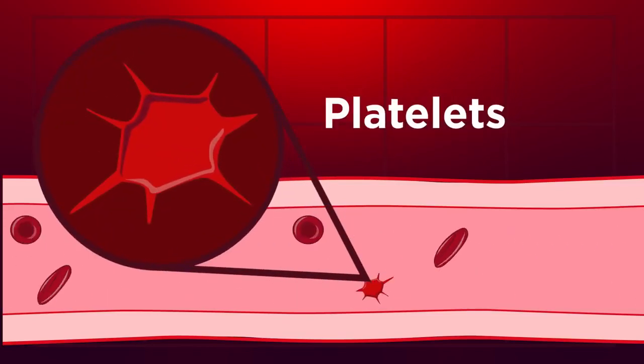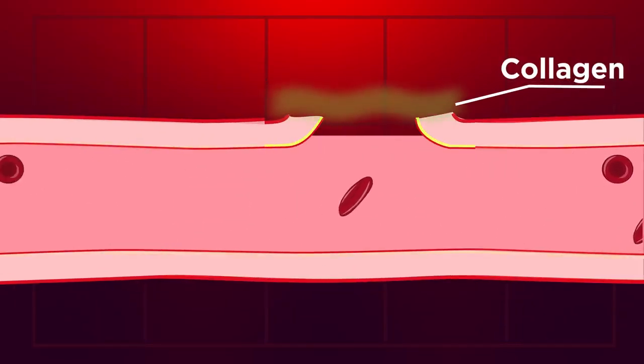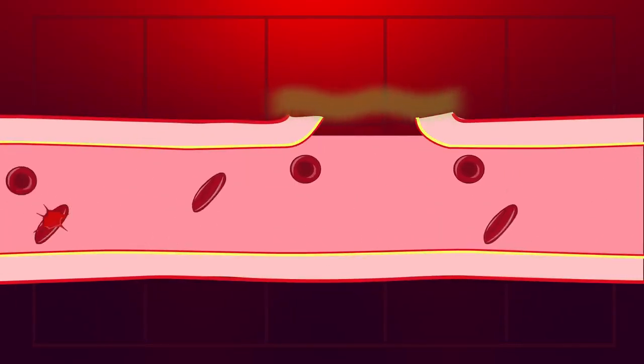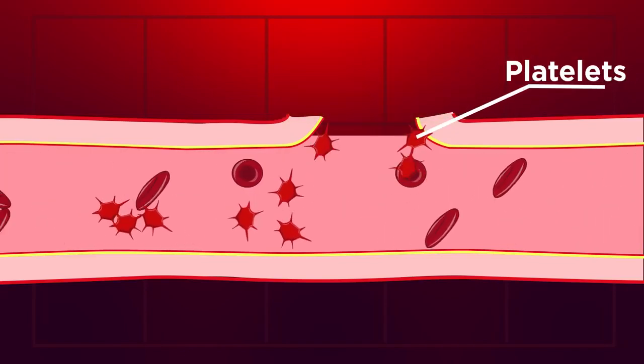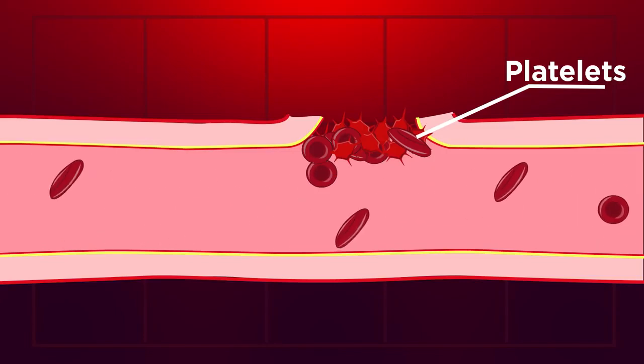Starting with platelets. These are tiny cell fragments that float around in our blood. When a blood vessel is damaged, collagen is exposed. This collagen exposure attracts platelets to the injured area. The platelets then stick together to form a plug. They've quickly built a barrier that stops us from losing too much blood.